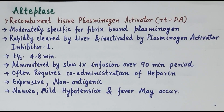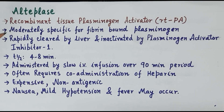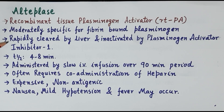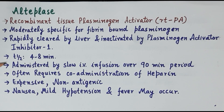The third class of fibrinolytics is recombinant tissue plasminogen activators. Alteplase is produced by recombinant DNA technology from human tissue culture. A key characteristic of alteplase is that it is moderately specific for fibrin-bound plasminogen — it predominantly activates plasminogen bound to fibrin — and therefore the risk of bleeding is less compared to streptokinase and urokinase. Alteplase is rapidly cleared by the liver and inactivated by plasminogen activator inhibitor 1, giving it a very short half-life of 4 to 8 minutes. It is administered by slow intravenous infusion over approximately 90 minutes and often requires co-administration of heparin as an anticoagulant.